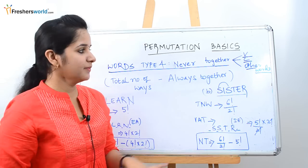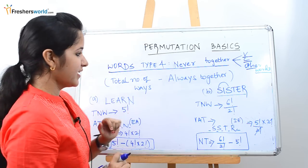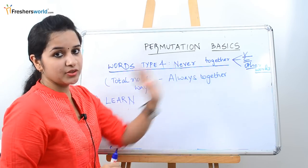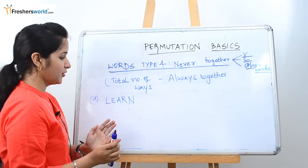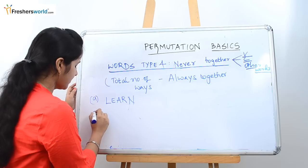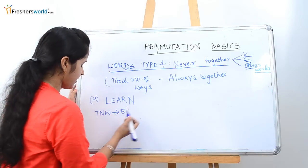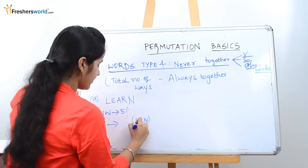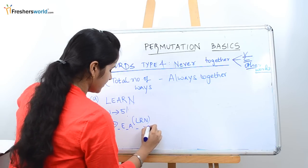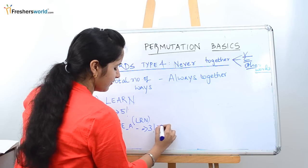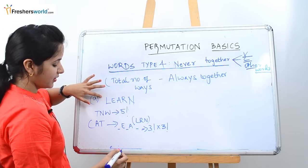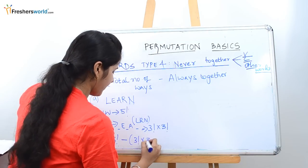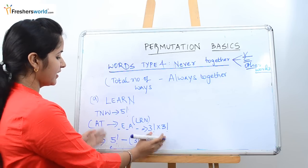A similar type of sum will come with consonants or other words. Let's take the same word LEARN where the concept is consonants are never together. First we take the total number of ways: 5 factorial. For always together: L, R, N are clubbed together, and E, A remain. What are the places? 3 factorial. L, R, N can be arranged in 3 factorial ways. So consonants never together for LEARN is 5 factorial minus 3 factorial into 3 factorial. Once you solve this, you will get the answer.